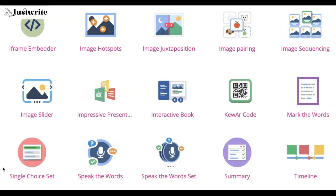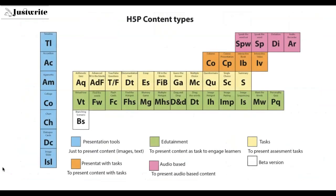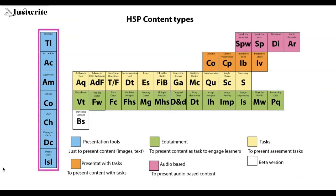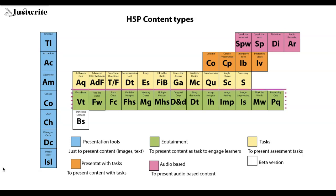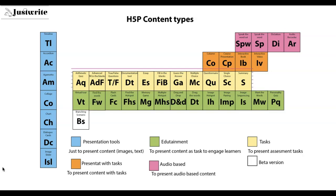On the next page, the content types are presented in a periodic table-like structure. The blue color content types are used to present images and text, and the green color content types are used to present content as a task to engage the learner.